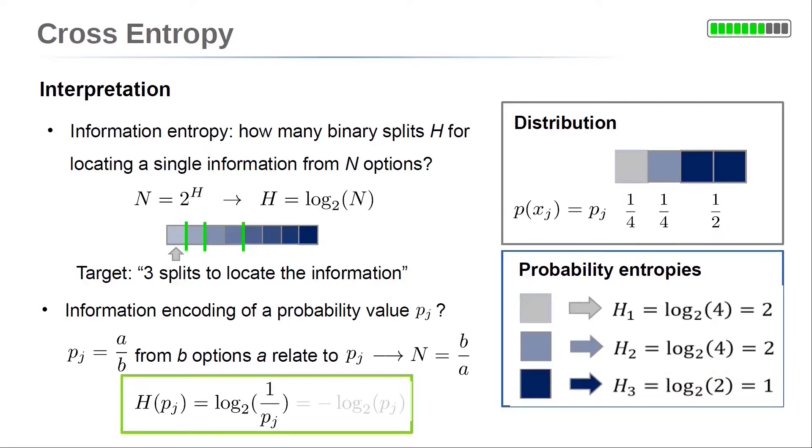The number of relevant options is capital N equals B over A, which is the inverse of the probability value. So, the information of a probability value pj is the logarithm base 2 of the inverse of the probability value, 1 over pj. With logarithmic law, this is the negative logarithm of the probability pj.